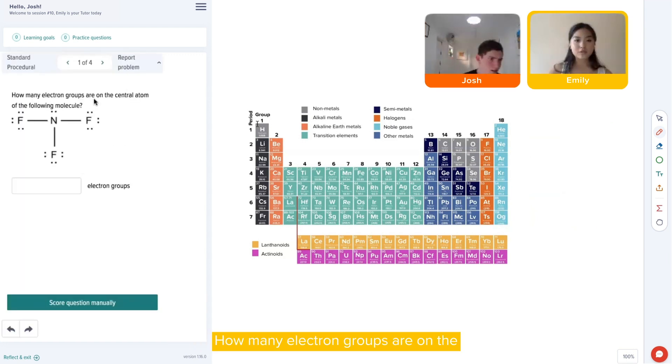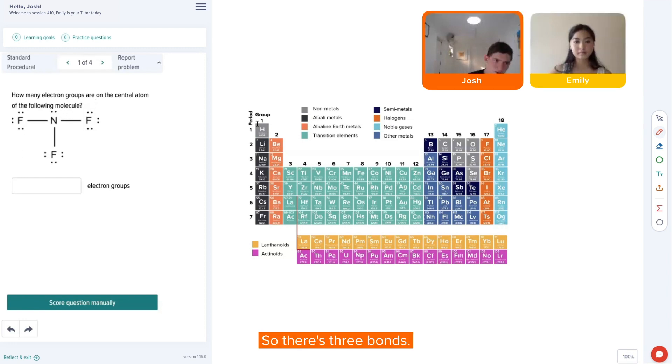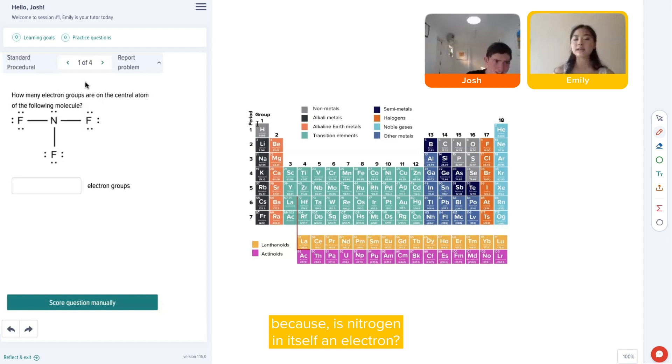How many electron groups are on the central atom of this molecule? There's three bonds and I would say four groups because I assume the nitrogen is counted as well. Why would you count nitrogen?